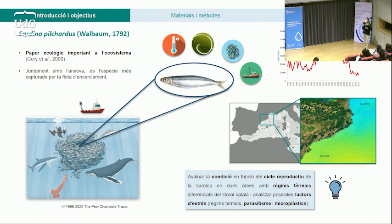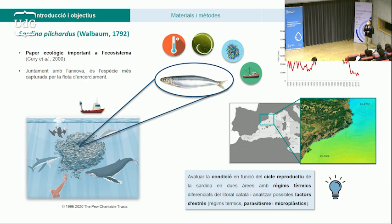Factors associats a aquesta davallada són l'increment de la temperatura de l'aigua associat al canvi climàtic, sobretot en mars semitancats com el Mediterrani, ja que les espècies d'aigua freda com la sardina no poden migrar a zones més òptimes i més fredes. Un altre factor és l'increment del parasitisme, la ingesta de microplàstics i la sobrepesca. L'objectiu del nostre estudi és avaluar la condició en funció del cicle reproductiu de la sardina en dues àrees amb règims tèrmics diferenciats del litoral català: una zona al nord, amb aigües més fredes, i una zona al sud amb aigües més càlides. Volem analitzar possibles factors d'estrès, com serien els règims tèrmics, el parasitisme i els microplàstics.